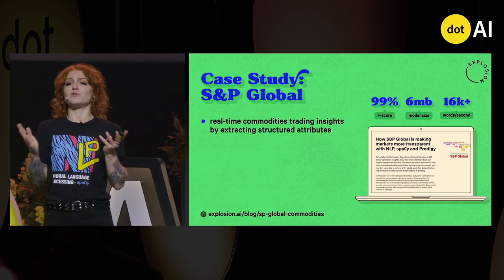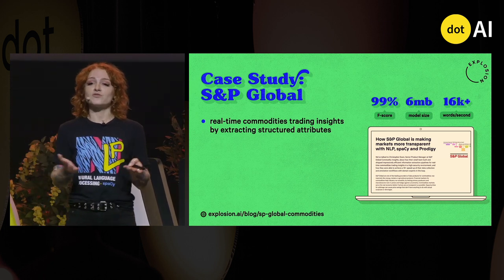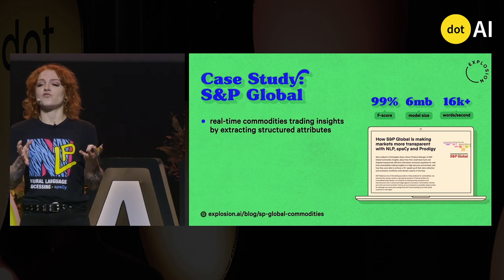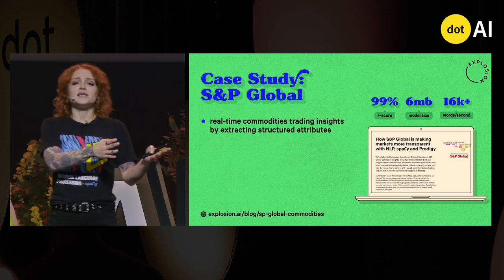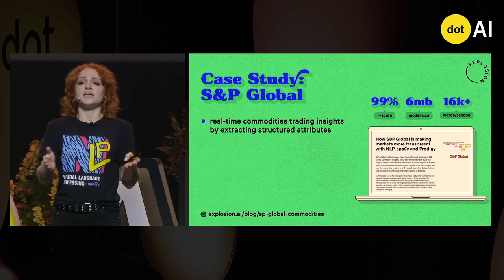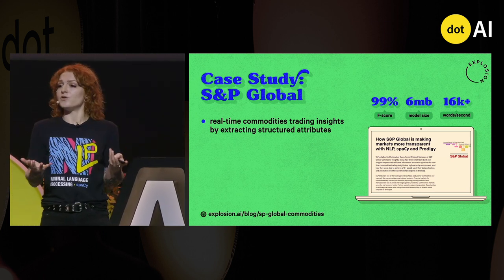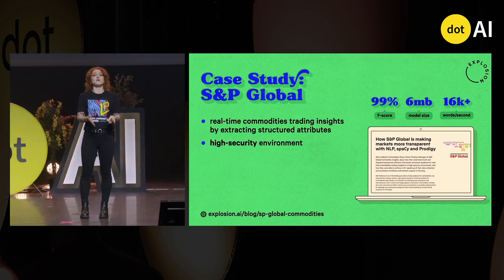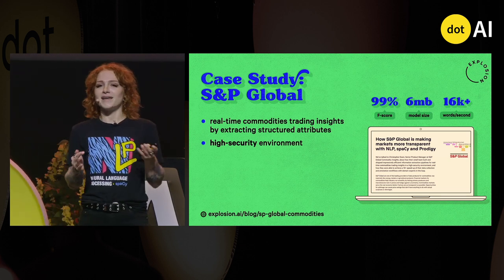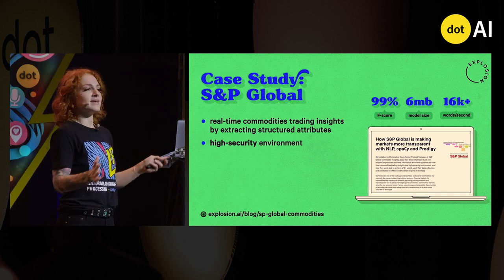To give you an example of how this looks in practice, I brought you a case study with a company called S&P Global, a large financial services company. What they're doing in this project is extracting insights from commodities trading — so if crude oil is traded somewhere, they want to extract the participants, the price, and other structured attributes and make that available as a feed for their customers. This is information that can significantly move the markets and impact the economy, so it's very important that the system runs entirely in-house. Even in their office it's very segregated — I went to visit them in London and their analysts really sit in a glass box that you can only access with a key card. Data privacy is absolutely crucial.